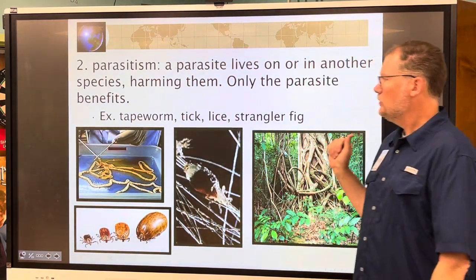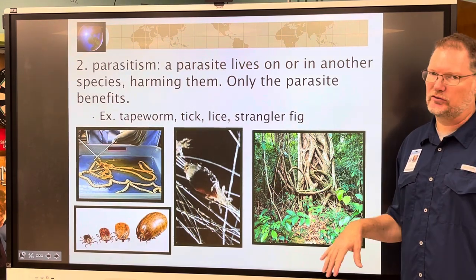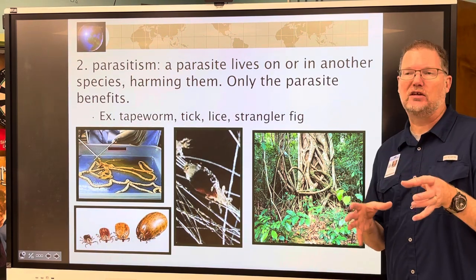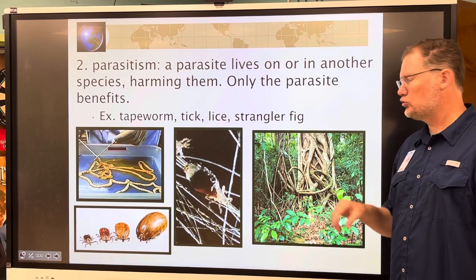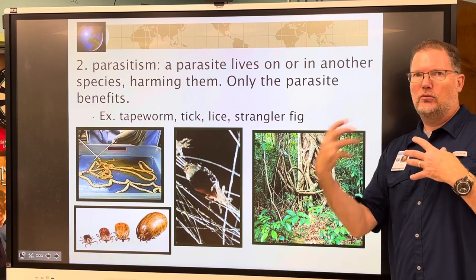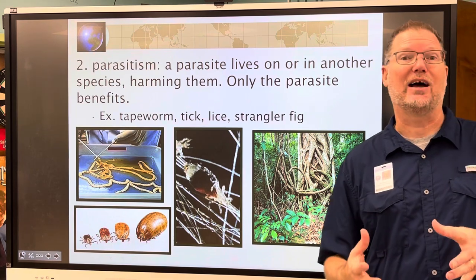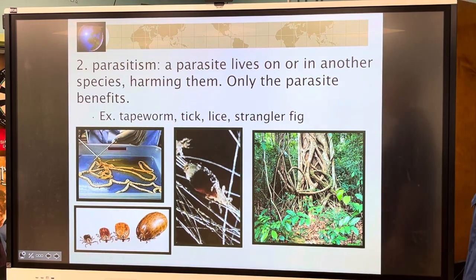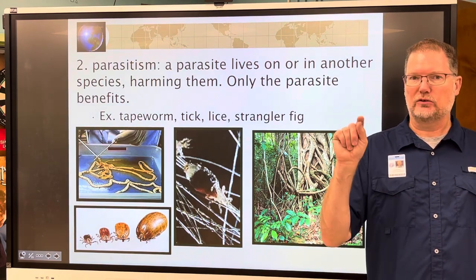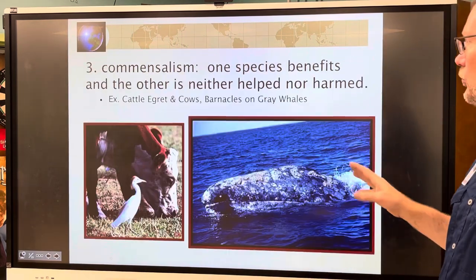Parasitism — we talked about tapeworms already. Other examples include fleas, ticks, lice, and the strangler fig. These trees grow all over this area. Birds eat the seeds and drop them on other plants; the seeds grow and eventually take over and parasitize the host plant. One organism is benefited, the other is harmed.